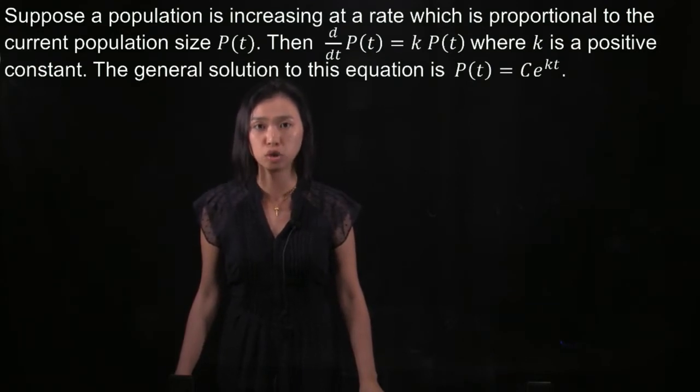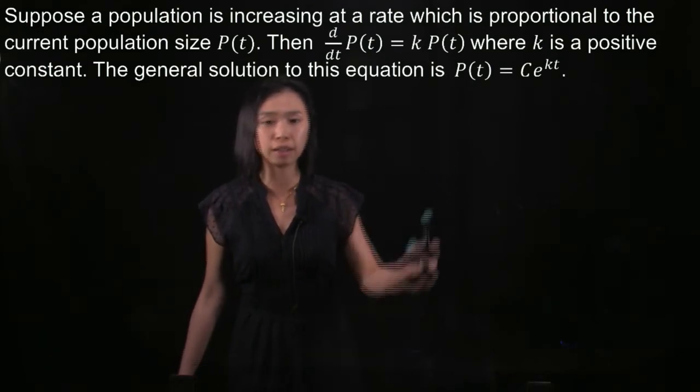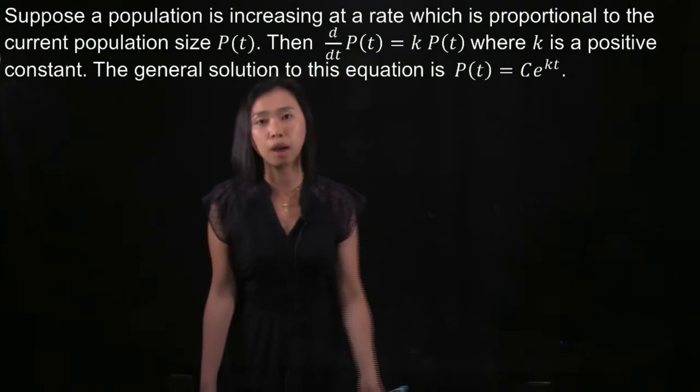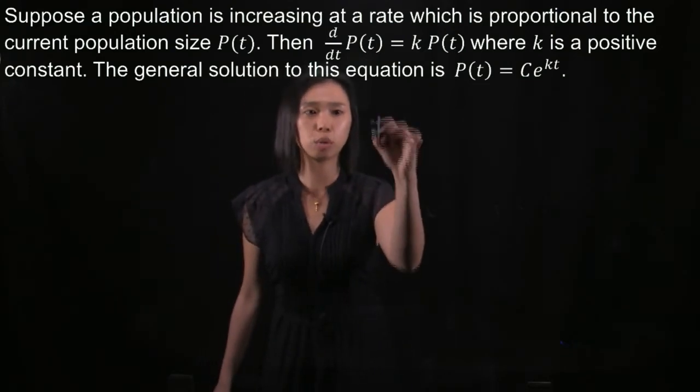If we would like to know the particular solutions, that means we would like to find the C here, and then we have to substitute t equals 0.